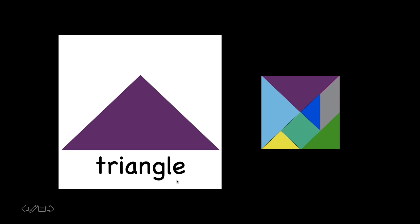The Triangle has this 'TRI', which means 3. In Triangle, we have three sides: one, two, three. That's why it's called a Triangle. Read after me: Triangle.